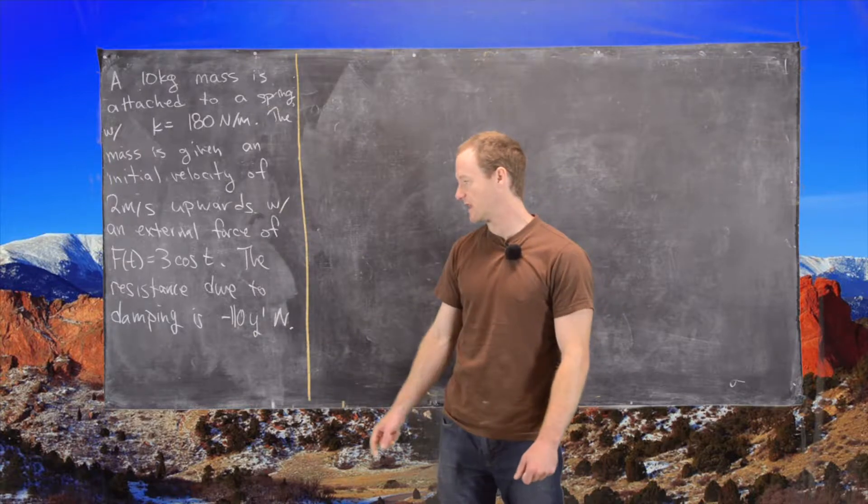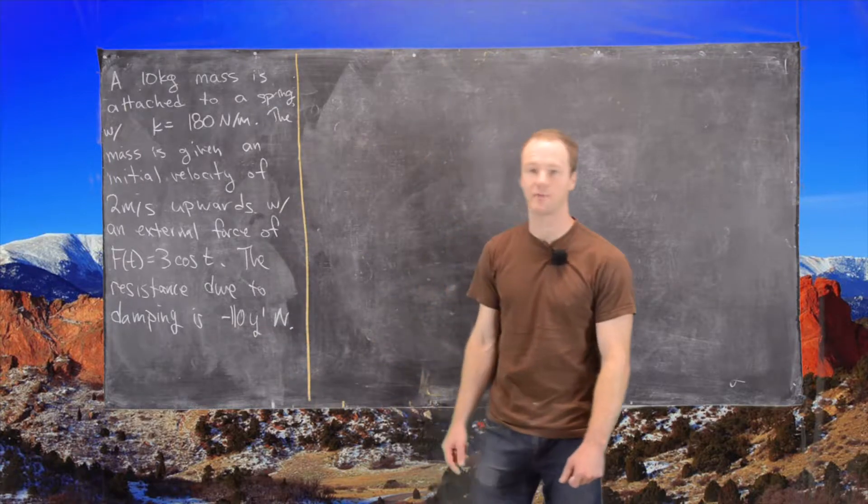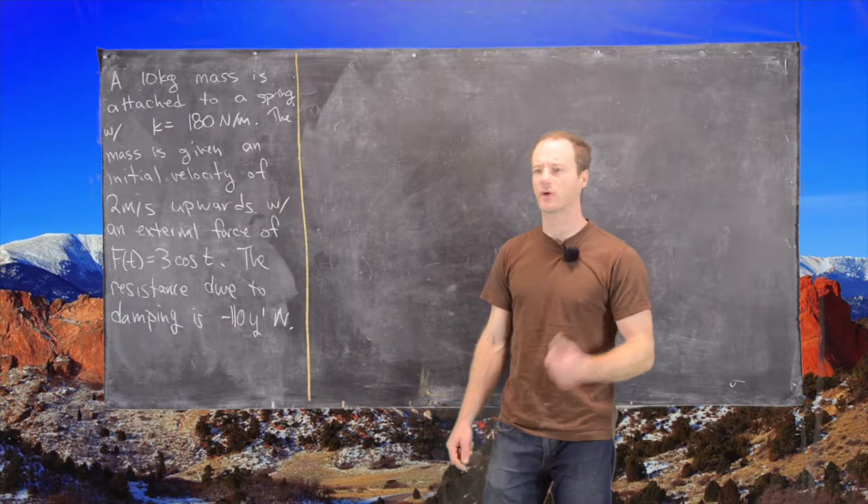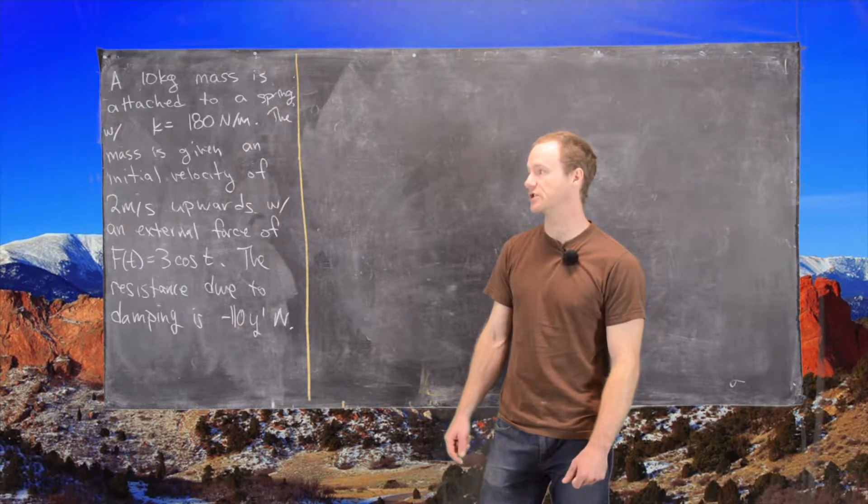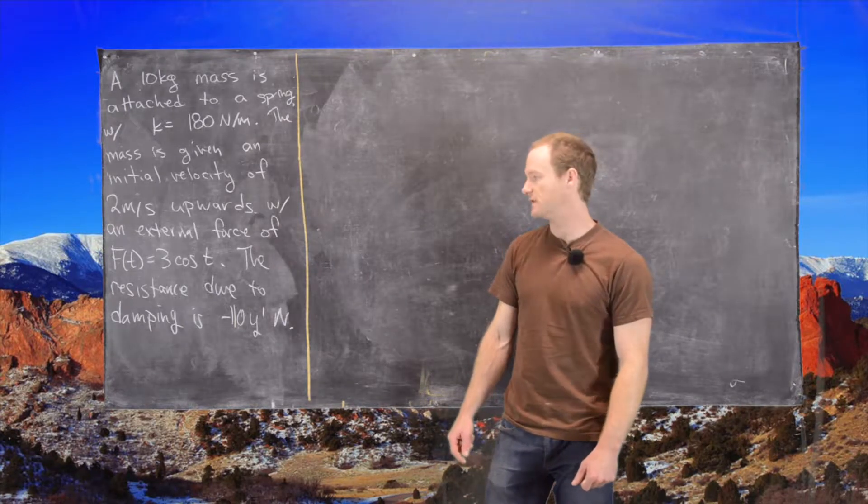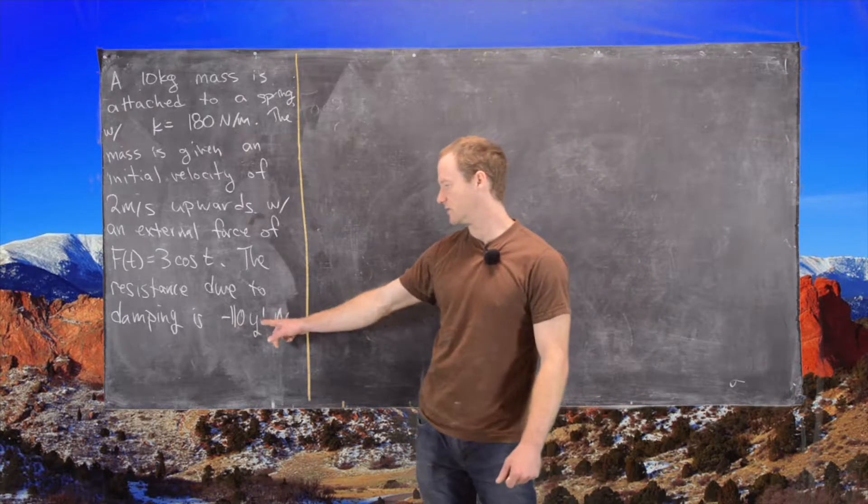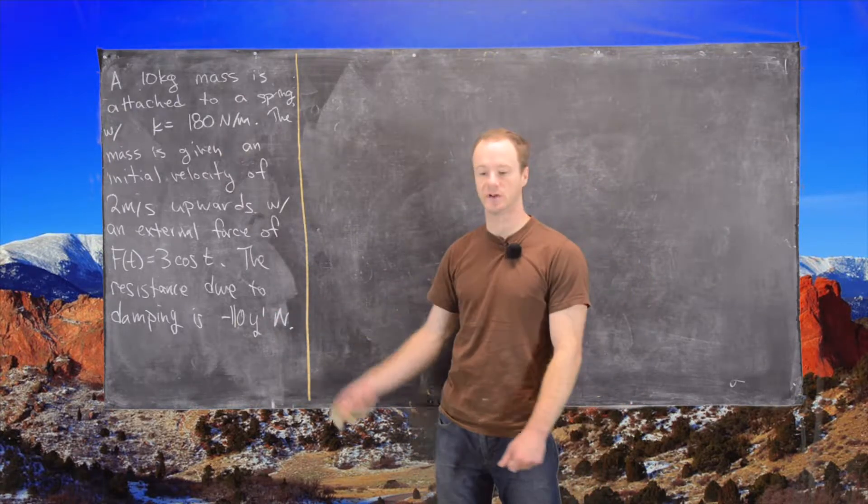The resistance due to the damping is 110 y prime newtons. So we derived the general formula for a differential equation of a spring system and we saw that the damping term was always connected to this first derivative. So I've just put it there.